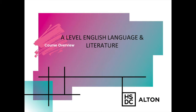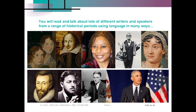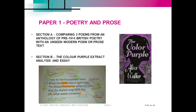Hello and welcome to a short presentation on the A level English Language and Literature course that we offer here on the Alton campus. It's an exciting and very diverse syllabus. The course is assessed by a combination of exams worth 80% and coursework worth 20%. We study a wide range of texts from novels by famous authors to speeches by famous politicians — how many of these people can you identify?